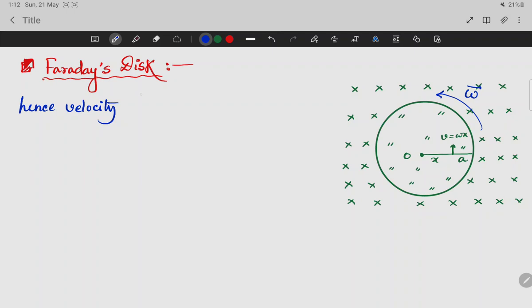Hence velocity, linear speed will be, hence linear speed at a distance x from pivoted point.